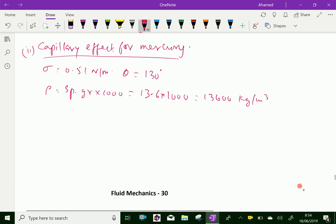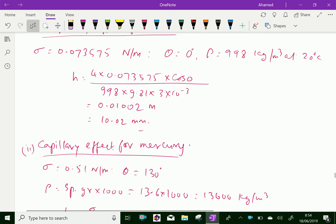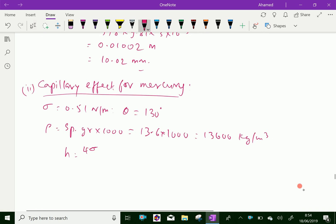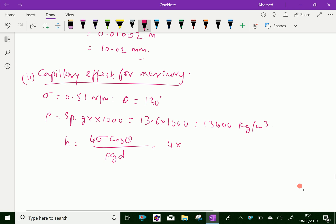Now let us apply the formula here. H equal 4 sigma cos theta over rho g D, equal 4 into 0.51 and cos 130 over 13,600 multiply 9.81 multiply 3 into 10 power minus 3.